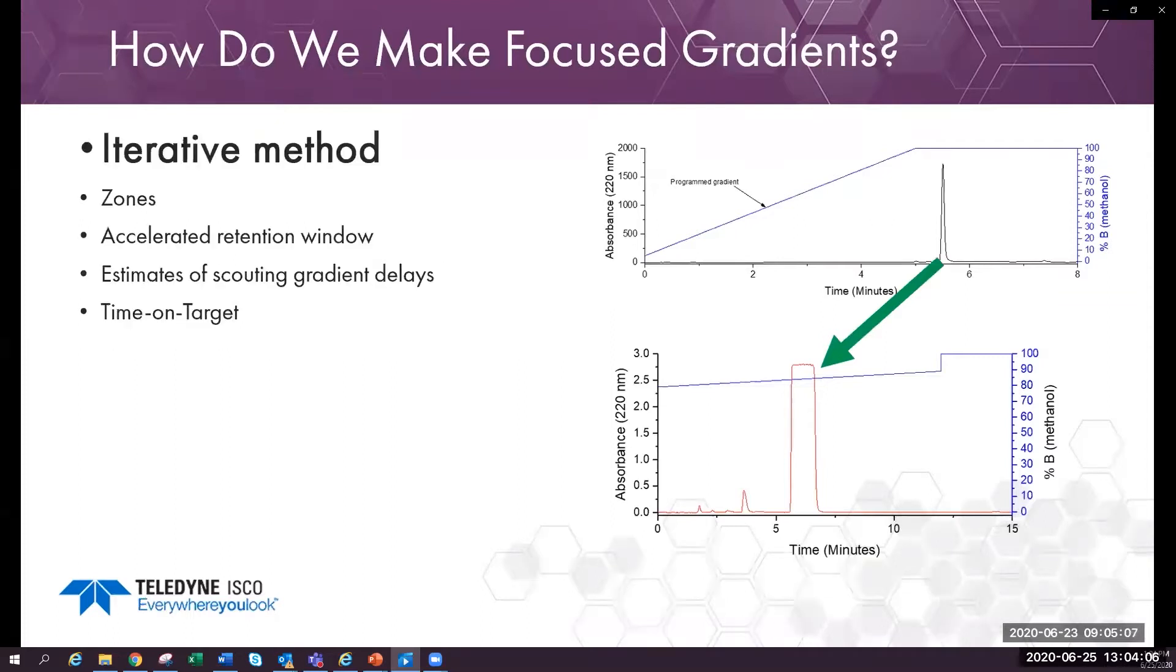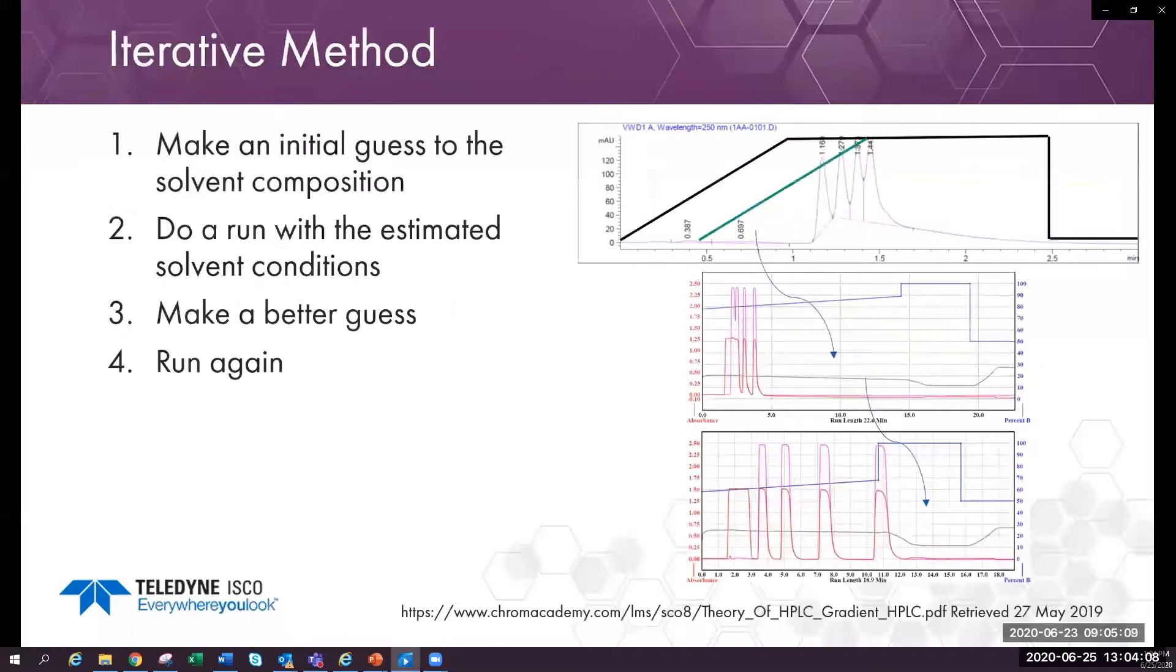The first of these is iteration. Assume a 20 by 150 millimeter column for the time and solvent estimates. Make a guess, do a run, and repeat until it is good enough. You will use at least half a liter of solvent and 17 minutes for each attempt, and it uses sample for each run.